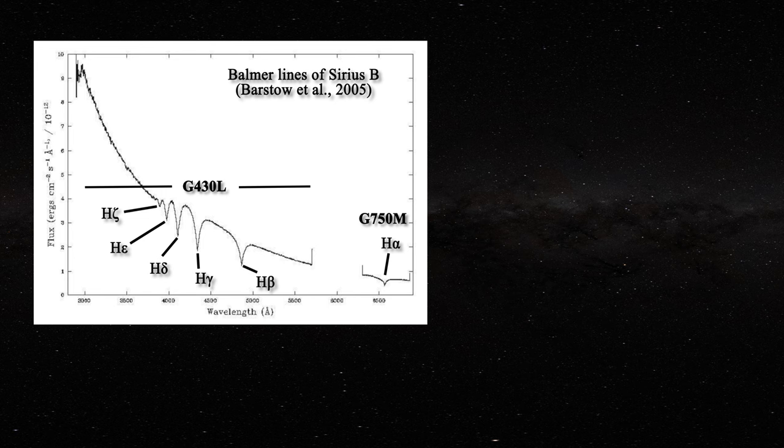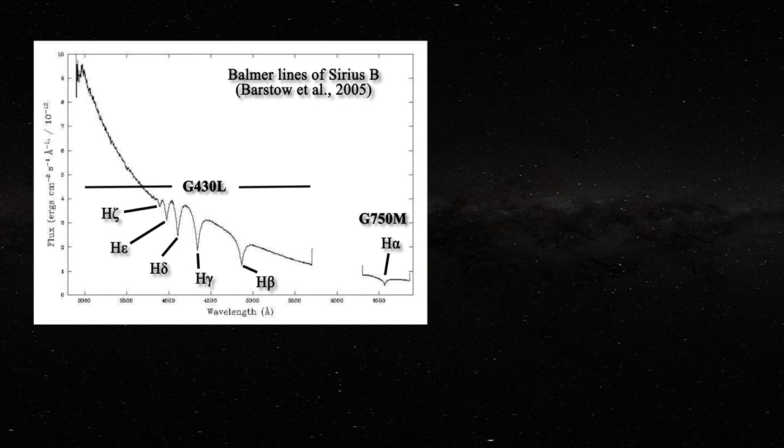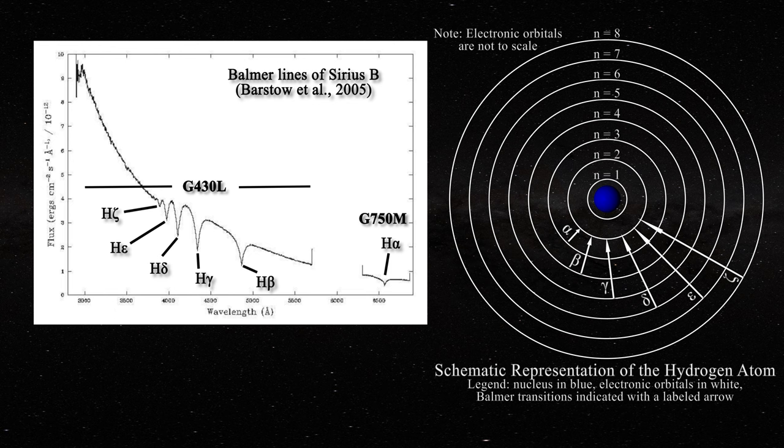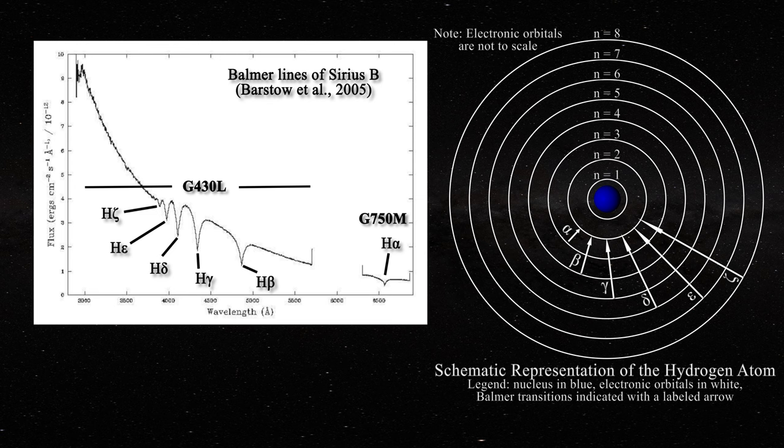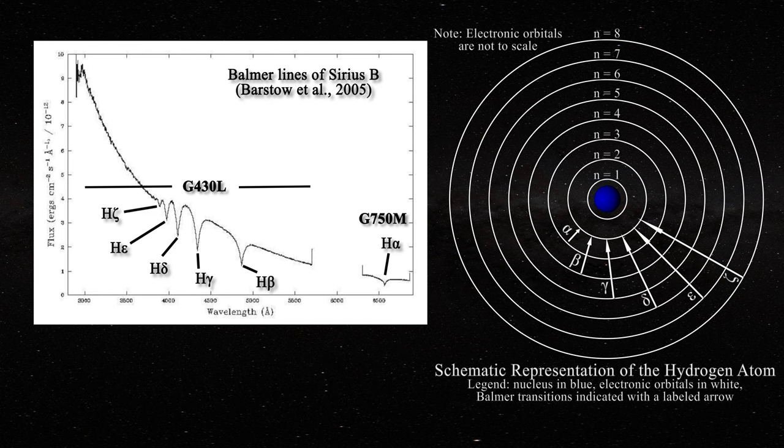As we saw previously, DA white dwarfs are characterized by strong Balmer lines, as can be seen in this spectrum taken by the Hubble telescope from Sirius B, the classic example of such a star. Balmer lines, if you remember, are spectroscopic lines of elemental hydrogen, which you can see in this figure. As stars are mainly made of hydrogen, the hydrogen lines become a frequent focus of astronomers. DA white dwarfs do not have readily apparent metallic or helium lines.